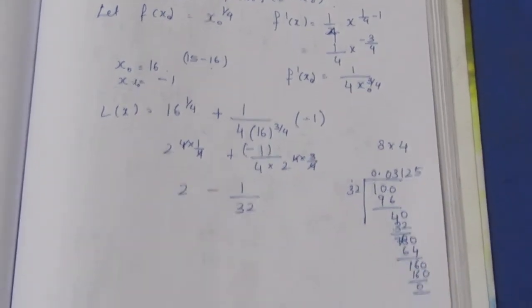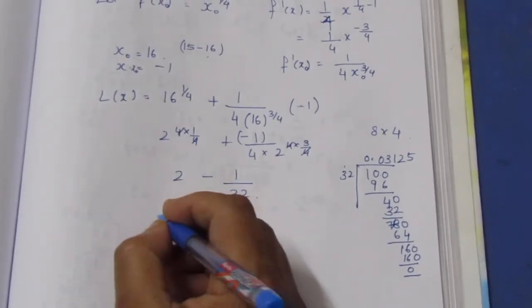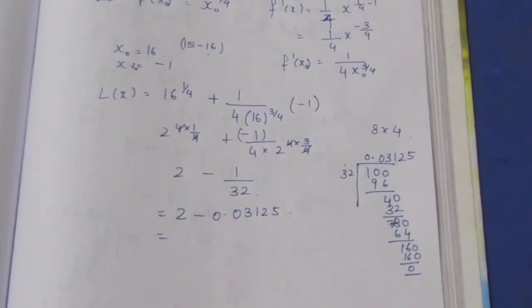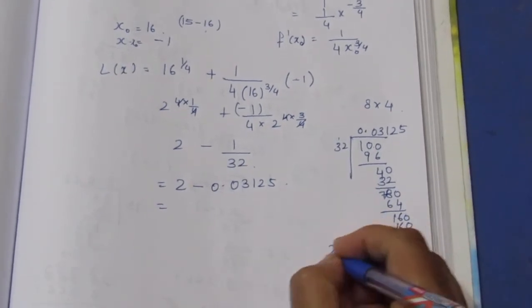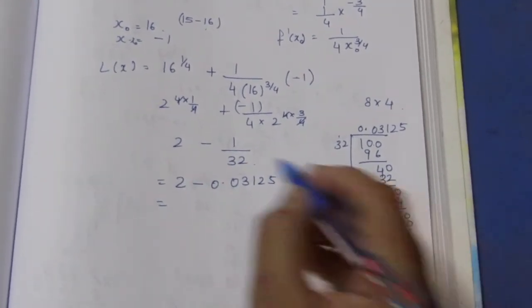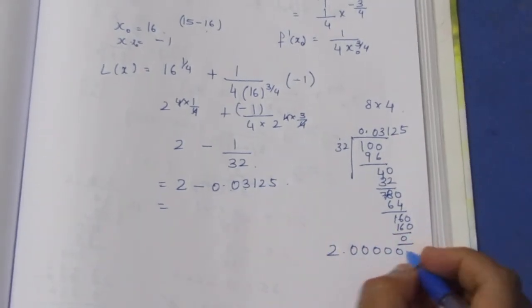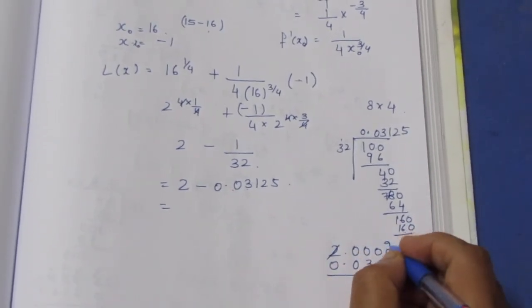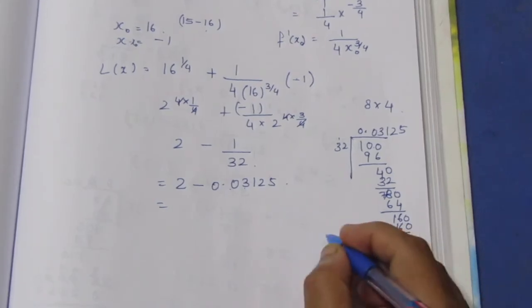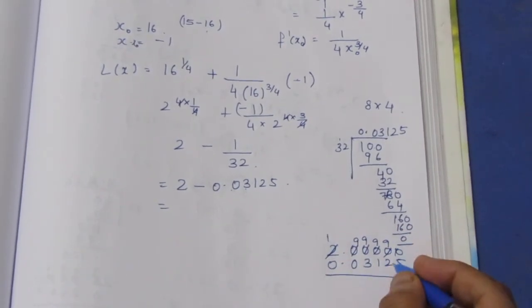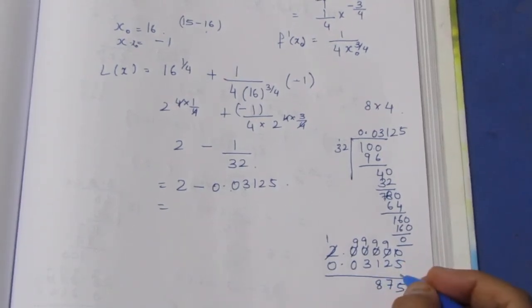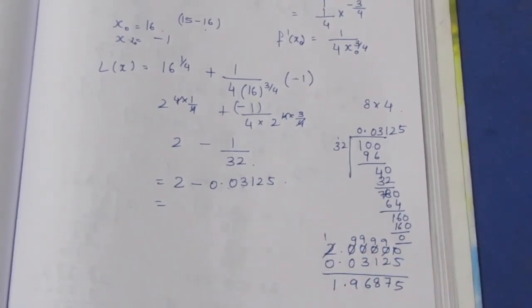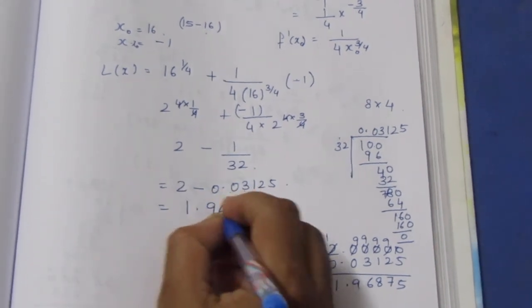So we have 2 minus 0.03125. Now subtracting: 1 point — the final answer is 1.96875.